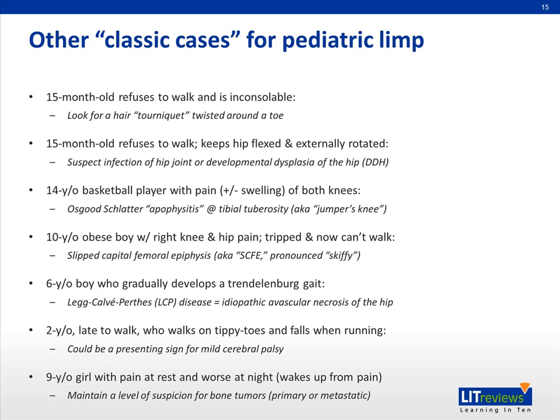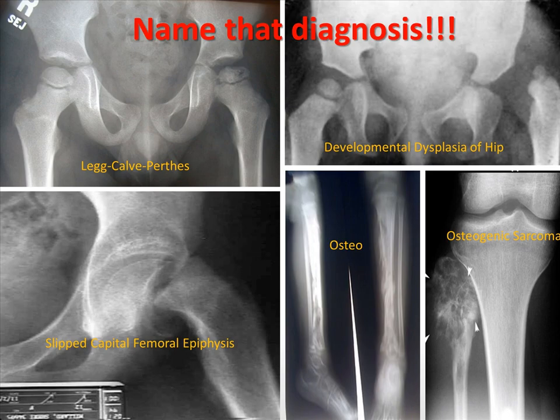Here are some vignettes of classic cases of pediatric limp that you'll want to learn to recognize, both for exams and for patients you'll encounter. I'll leave you with this to review in your own time. Similarly, here are some radiographic findings that are important to be able to recognize — they'll appear on the boards and in clinical practice — and I'll leave you with the opportunity to review these on your own time.